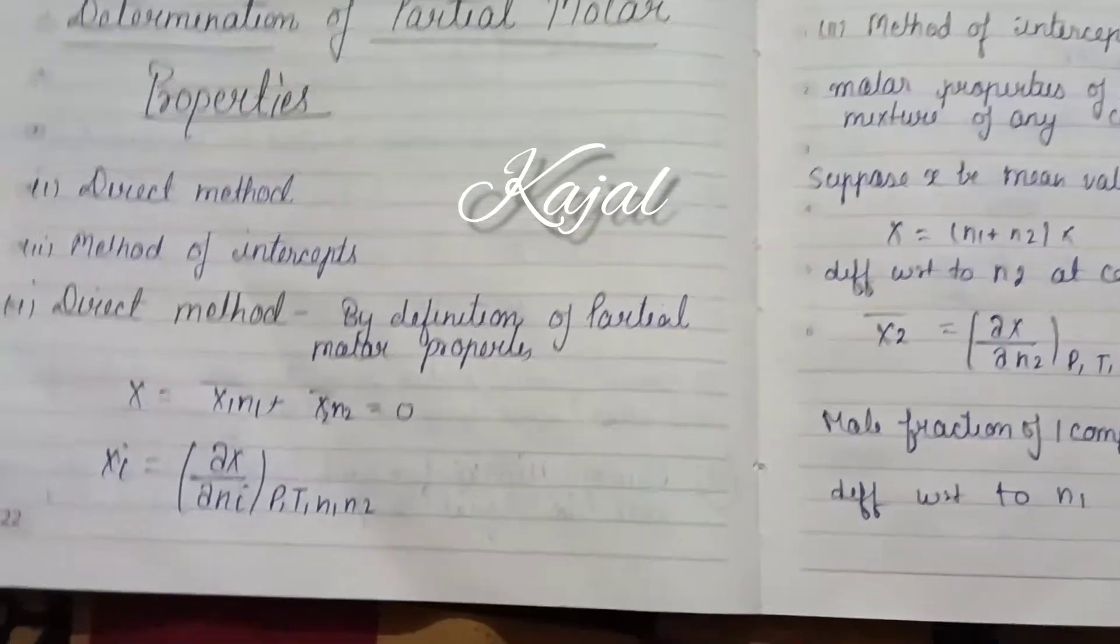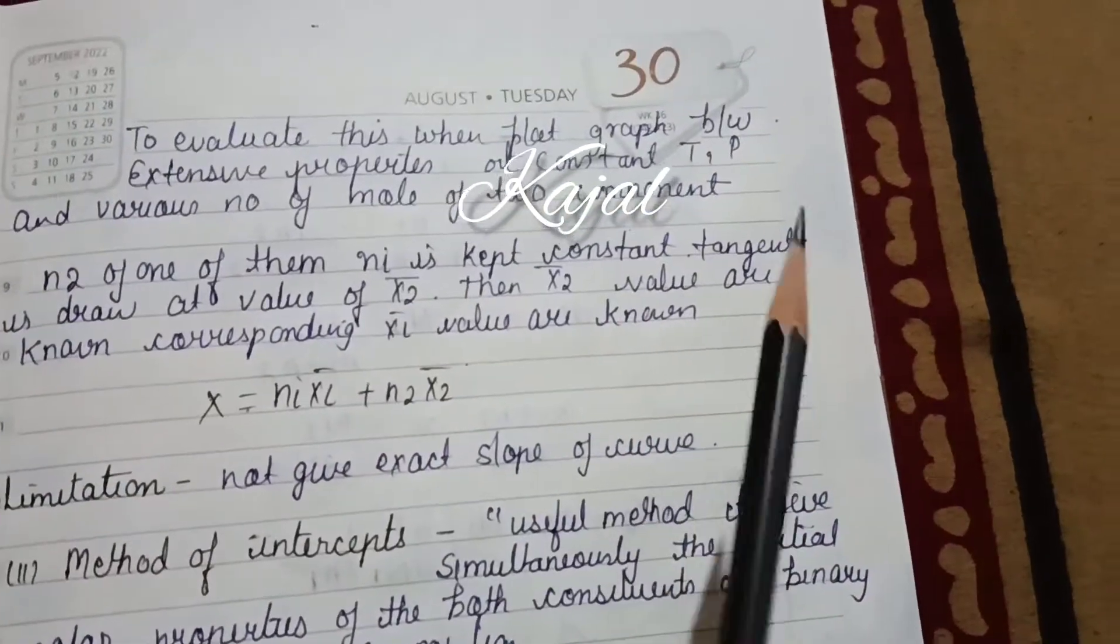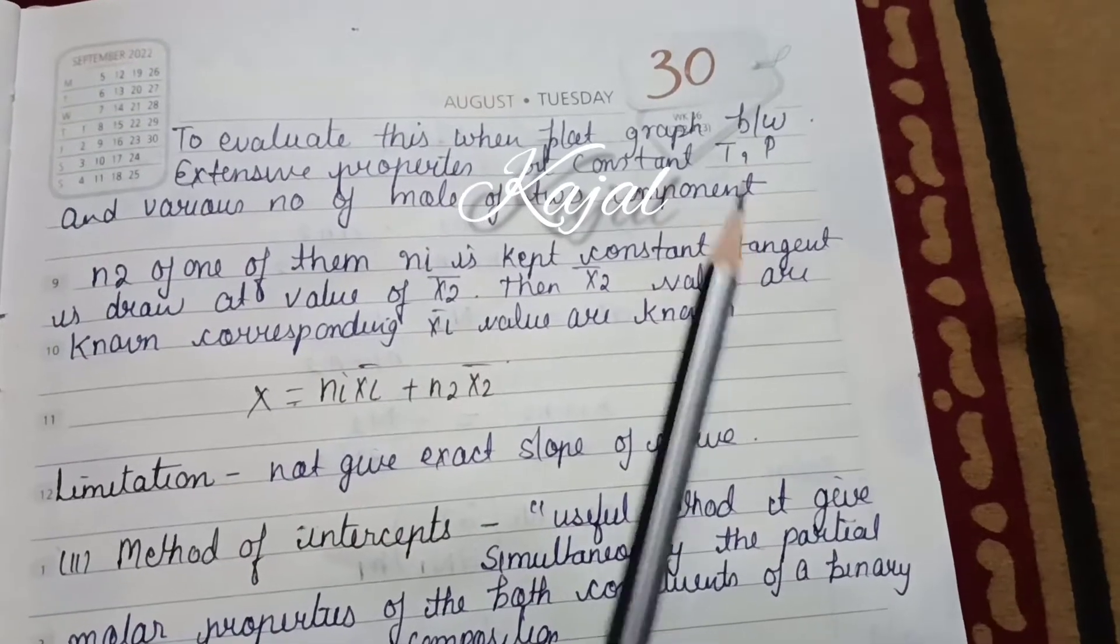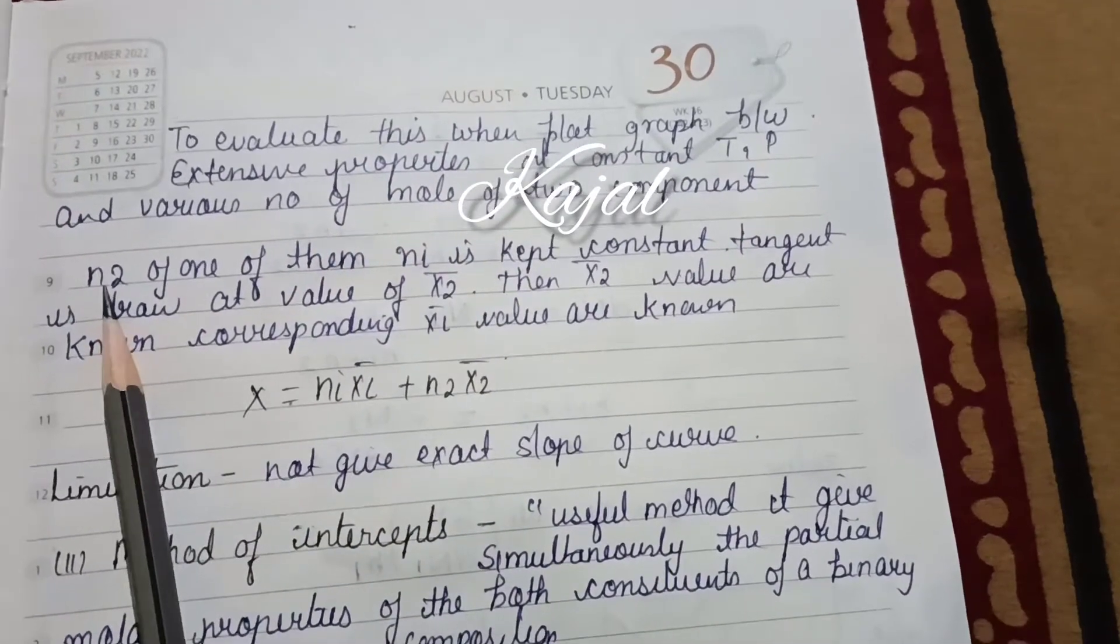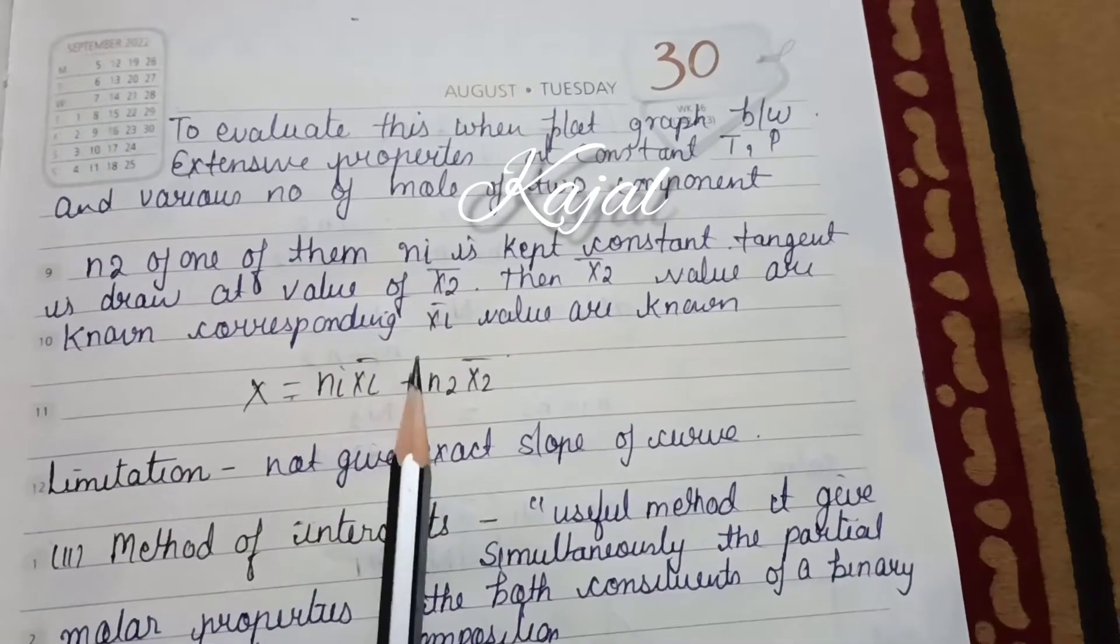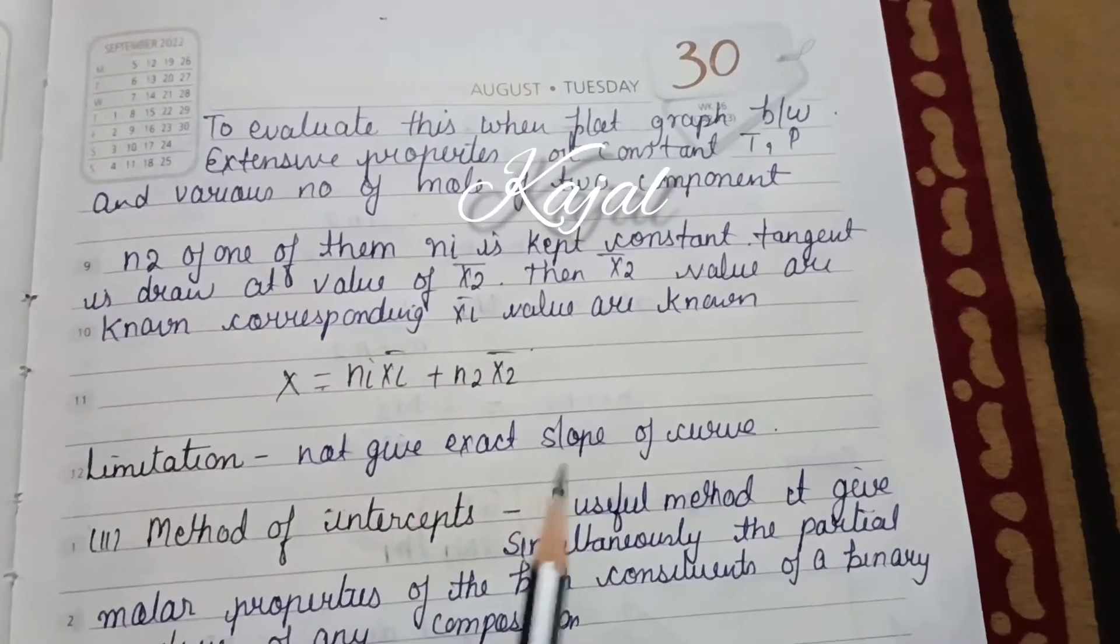What do we do in Direct Method? Partial Molar Properties is X upon Ni. To evaluate this, we will graph extensive properties at constant temperature and pressure and number of mol. If we find N1, we will find this formula. What is the limitation? We don't give exact slope.